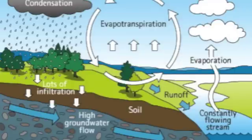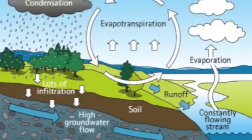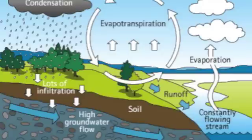Runoff flows through rivers and overland. Some sinks underground — that's known as infiltration. Groundwater flows to the ocean all again. Aquifers are deeper than the groundwater, but their destination's just the same.